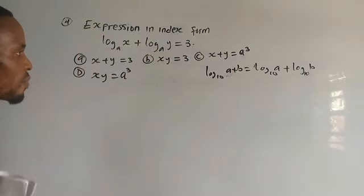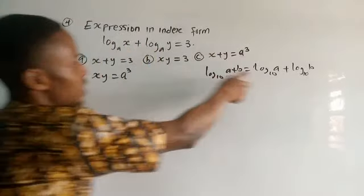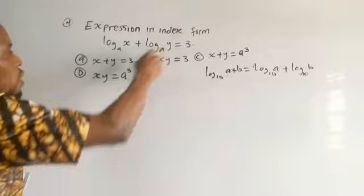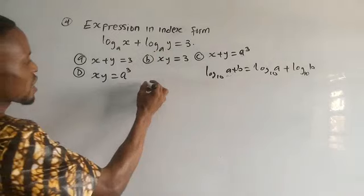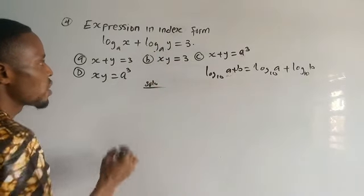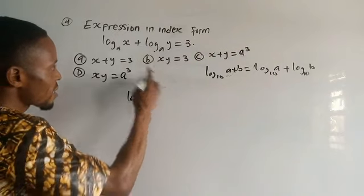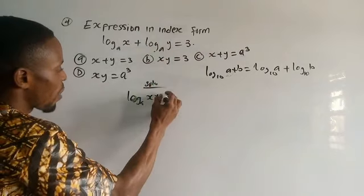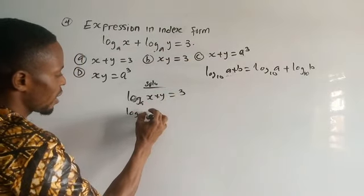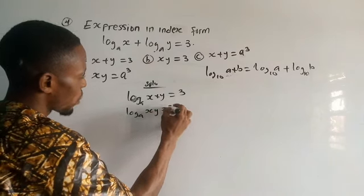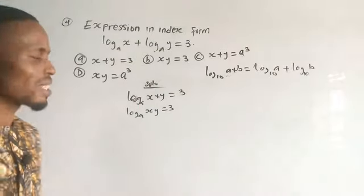So let's apply this to what we have. In this expression, a is represented as x and b is represented as y. Since they have log base 8 in common, we can combine them: log base 8 of x times y equals 3, which is log base 8 of xy equals 3. So we are getting there step by step.